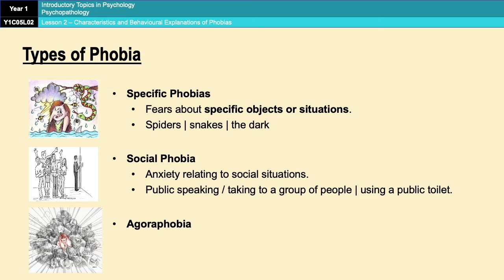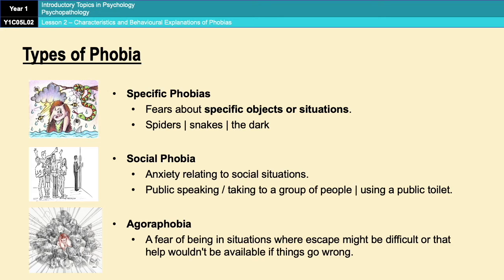Finally, we've got agoraphobia, which is a little bit complex. A lot of people think agoraphobia is simply a fear of open spaces, but it's much more complex than that. Agoraphobia is actually a fear of being in situations where escape might be difficult, or where help wouldn't be available if things went wrong. So it's not just open spaces — it could be fear of travelling on public transport, visiting a shopping centre, or even leaving home. Those are all forms of agoraphobia.